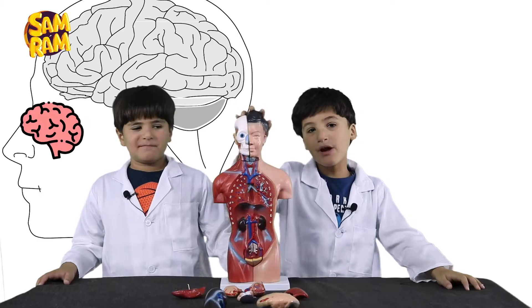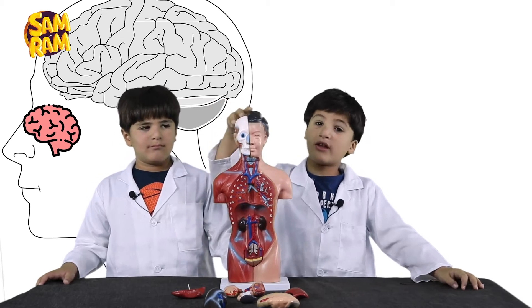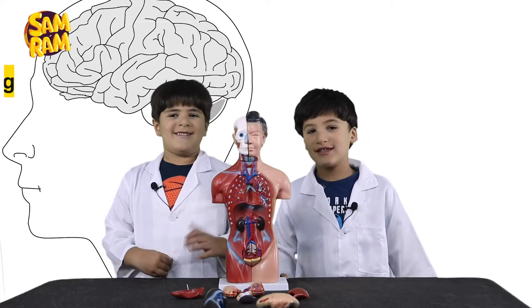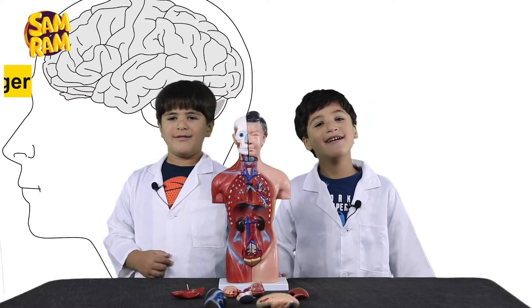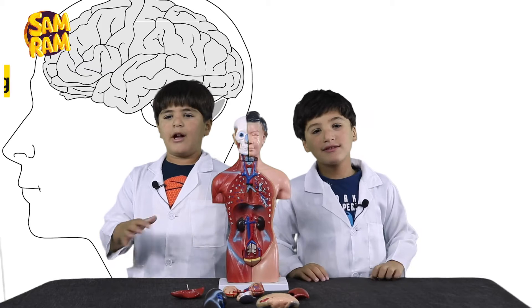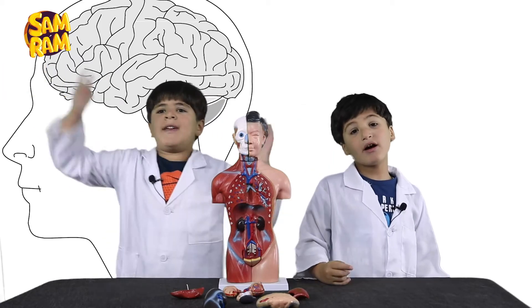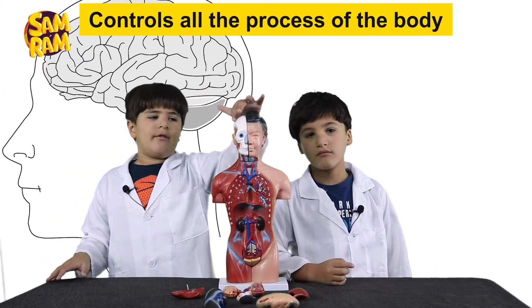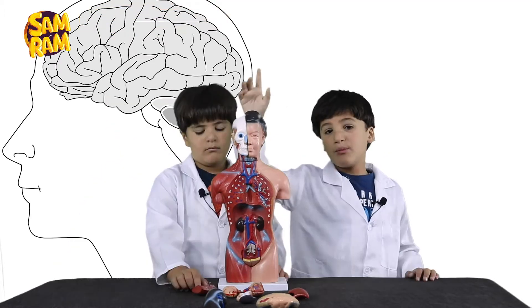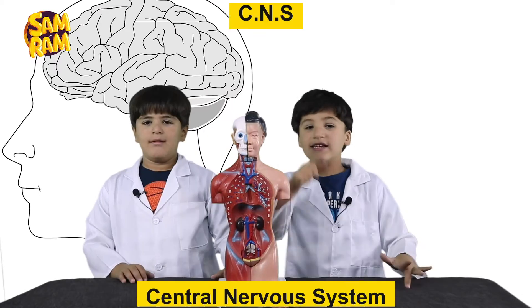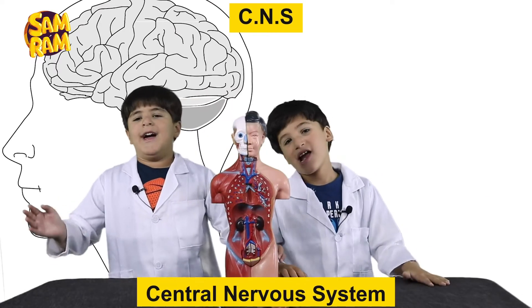The brain is a complex organ that controls emotions, eating, breathing, hunger, motor skills, touching, and many more. Actually, it controls all the processes of the body. The brain and the spinal cord is the CNS.